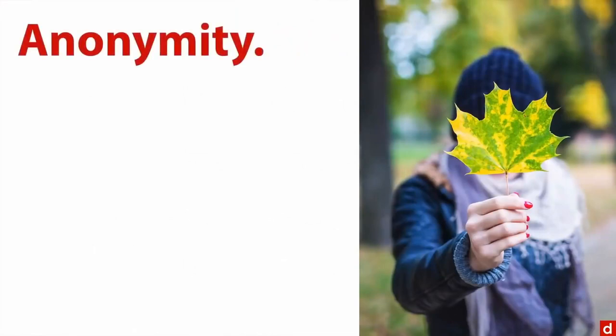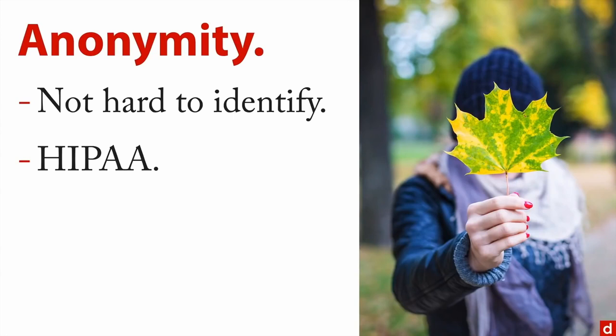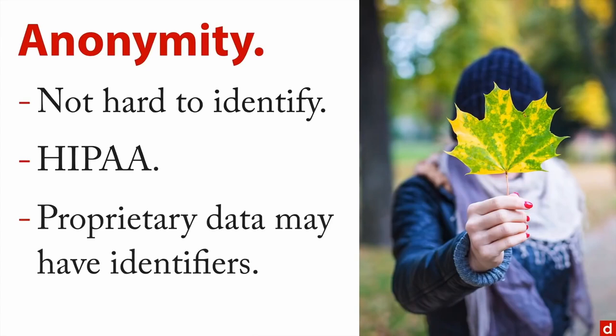Next is anonymity. It's really not hard to identify people in data — if you have GPS data at just four points in time, you have about a 95% chance of knowing exactly who someone is. Before HIPAA (Health Insurance Portability and Accountability Act), it was easy to identify people from medical records; since then it's become much more difficult. For proprietary data from a client — where you may know who the people are — even if data has identifiers, the primary obligation is to maintain privacy and confidentiality.